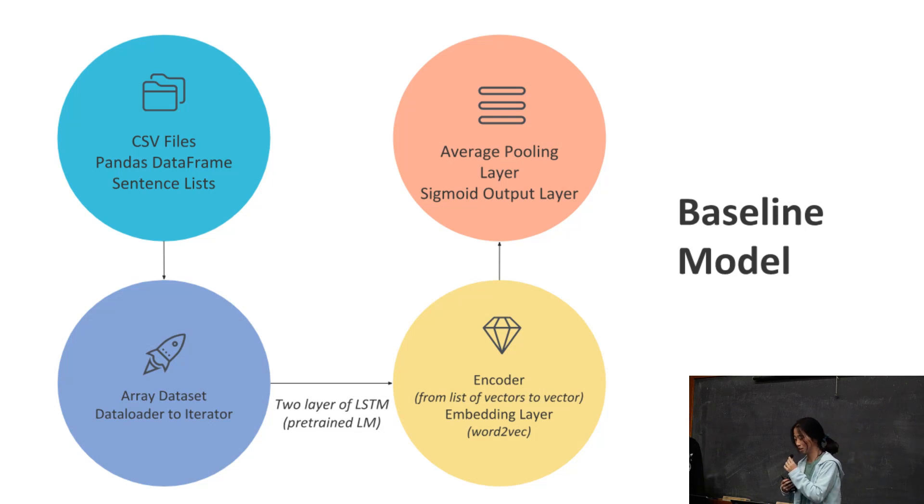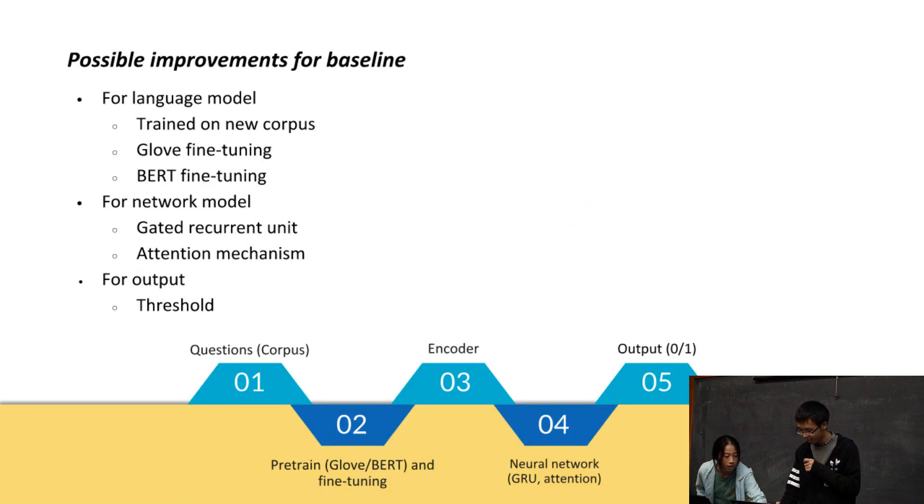Our current model has a very low recall, which is really bad because we want to recognize those toxic comments or questions. We came up with the following improvements, starting with the data pipeline.